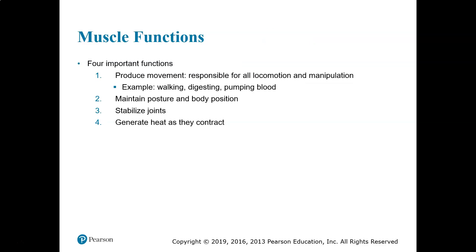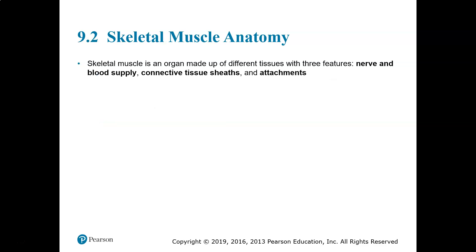Four important functions of muscle tissue: to produce movement — and this does not just mean skeletal movement, but also movements through the digestive system and movements of blood through the cardiovascular system. To maintain posture and body position, to stabilize your joints, and to generate heat as they contract, which helps us maintain our constant body temperature.